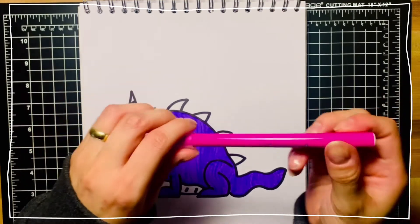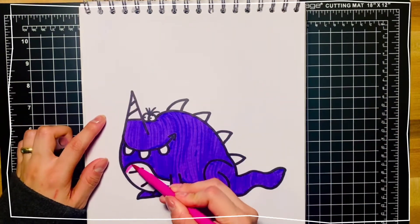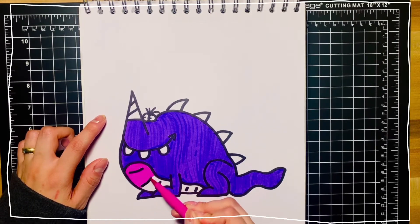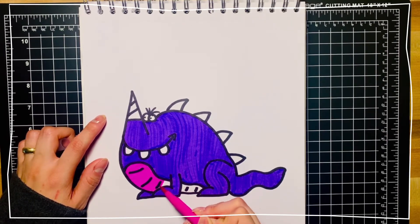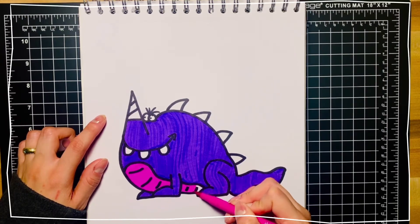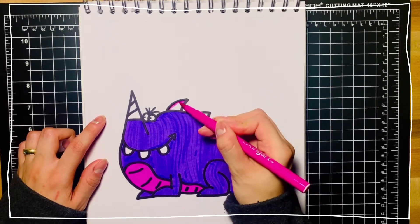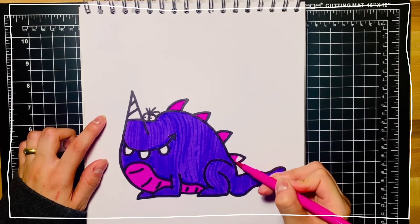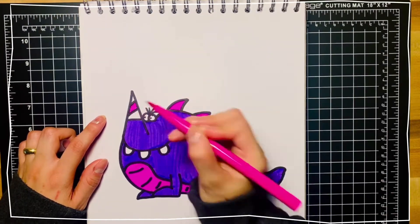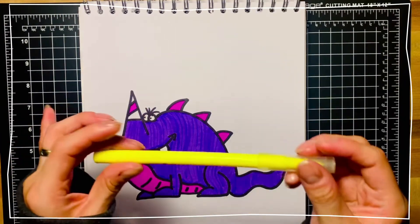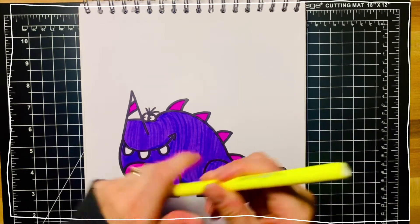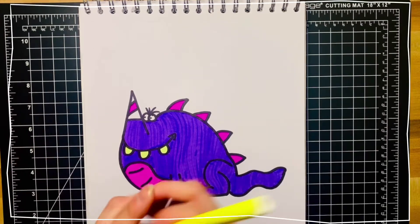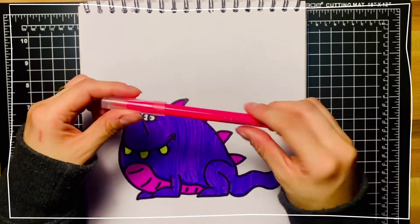Next, we're going to use our dark pink. Next, we're going to use yellow on his teeth. And now we're going to use light pink on his horn.